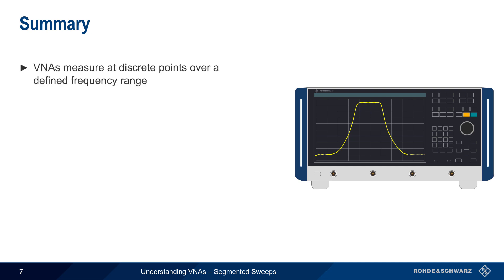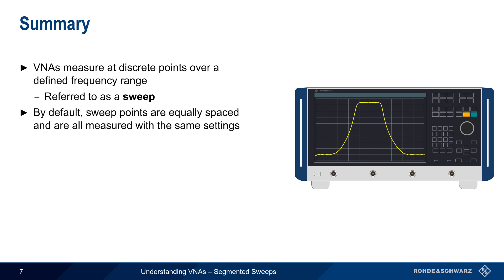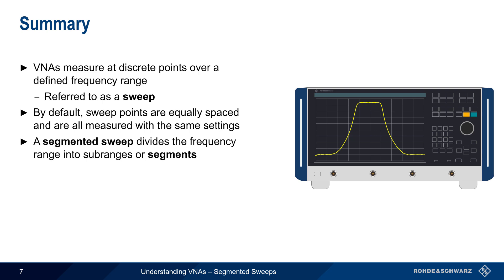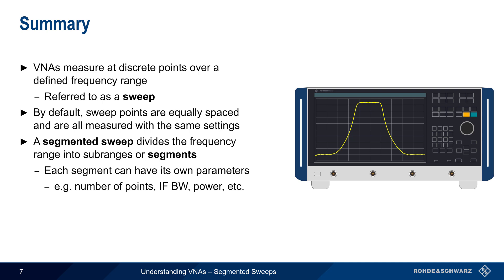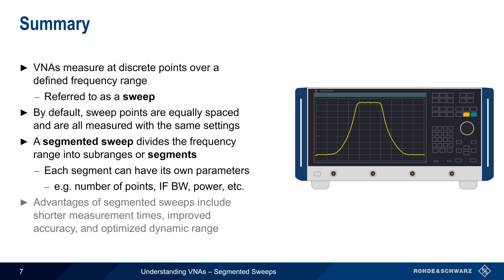Let's end with a brief summary. Vector network analyzers measure at discrete points over a defined frequency range, and the set of these points is commonly referred to as a sweep. By default, the points in a sweep are equally spaced, and all points are measured with the same settings. In a segmented sweep, the frequency range is divided into sub-ranges or segments, each of which has its own independently configurable parameters, such as the number of points or step size, IF bandwidth, power, etc. Segmented sweeps are used in a wide variety of applications, and their advantages include shorter measurement times, improved accuracy or resolution, and optimization of dynamic range.